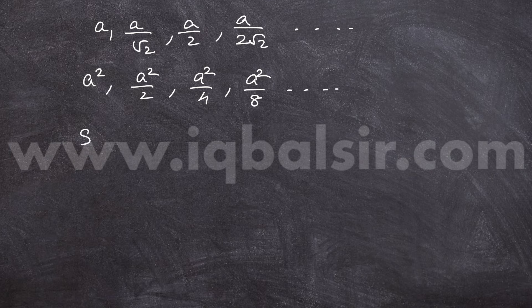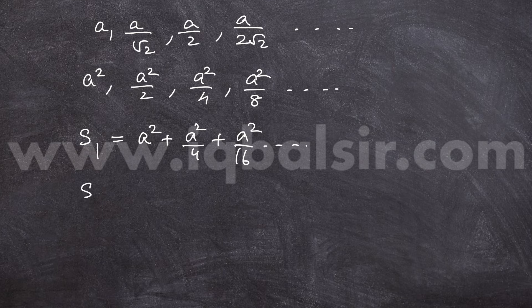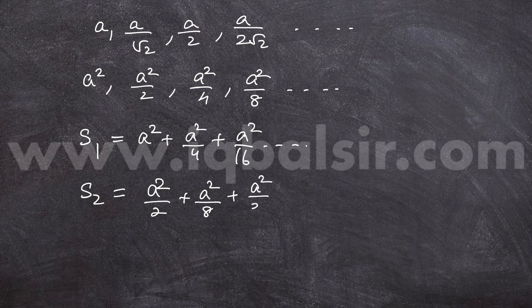Here, S1 is the sum of areas of the alternate squares starting from the first square. So, that is A square plus A square by 4 plus A square by 16 and so on. S2 is the sum of the other squares starting from the second square. That is A square by 2 plus A square by 8 plus A square by 32 and so on.